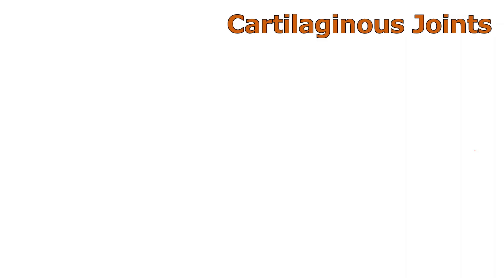Cartilaginous joints have two types, and both can be seen on one image. The first type of cartilaginous joint is called a symphysis — plural symphyses. The pubic symphysis is circled here in red, where the two innominate bones of the pelvis connect — specifically where the two pubic bones meet at the center midline of the body. It is made of fibrocartilage, a type of cartilage that is great at shock absorption. The intervertebral discs along the vertebral column are also examples of symphysis joints and are also made of fibrocartilage.